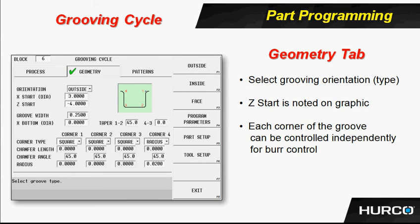We also have taper, just to the right of X bottom — taper 1-2 and taper 4-3. If one of those sides of the groove had a taper, you would put that value. In the example here we see a value of 45 degrees, meaning from corner 1 to corner 2 we start at 4 inches in Z at corner 1, but then move down at a 45-degree angle to corner 2. You could also apply the same thing on the 4-3 side if needed.